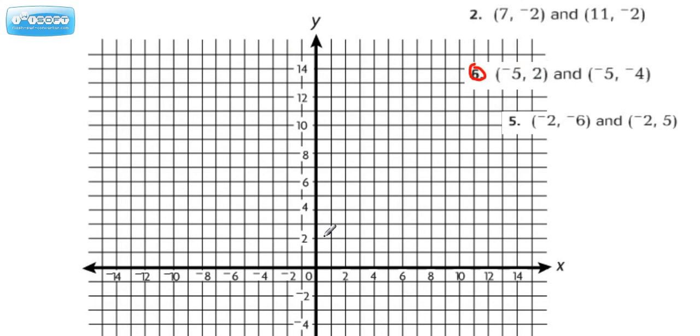Plot a negative 5, which would be left 5, and then up 2. That's going to be right here. We just plotted this. And now we're going to plot this. A negative 5, so that would be here. And then we're going to go down for 1, 2, 3, 4. That's going to be right here.